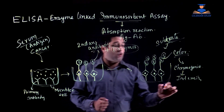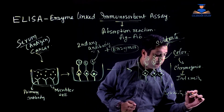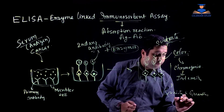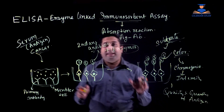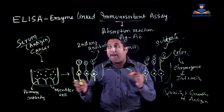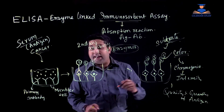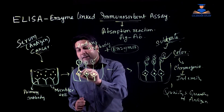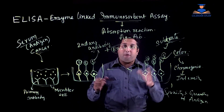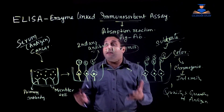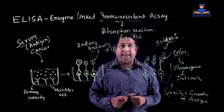Based on the intensity of the color generated in the microtiter well, we can determine the quantity of the antigen we are detecting. This particular method is called sandwich ELISA because the antigen is sandwiched between the primary and secondary antibody. This is the basic idea about ELISA, or more specifically, sandwich ELISA. Stay tuned for our next videos. Thank you.